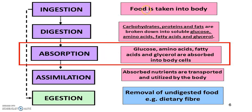To summarize digestion: it started in the buccal cavity, continued in the stomach, and then in the small intestine. The three main components were fully processed: carbohydrates changed to glucose, proteins changed to amino acids, and fats changed to fatty acids and glycerols. Absorption then starts in the small intestine, where glucose, amino acids, fatty acids and glycerol — the simpler forms of food — are absorbed.